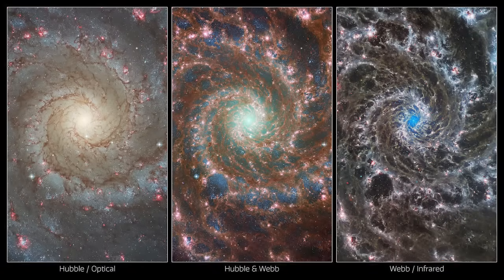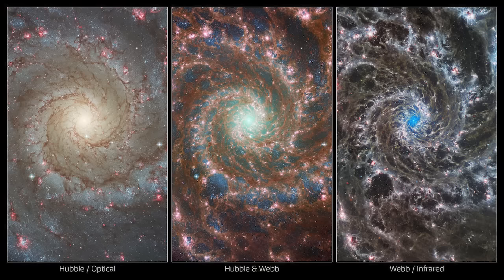These images revealed some amazing things. In particular, we can see that M74's spiral arms, which house filaments of gas and dust, are winding outward from the center of the galaxy.